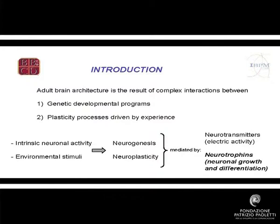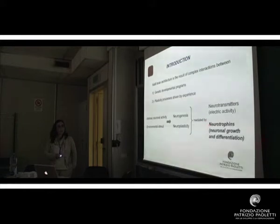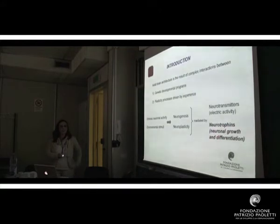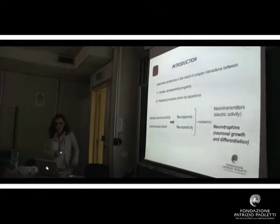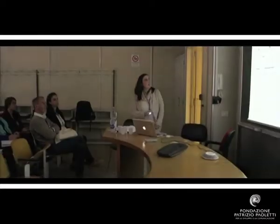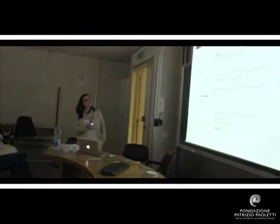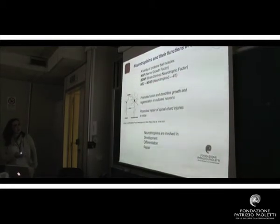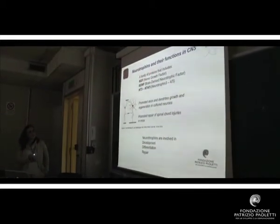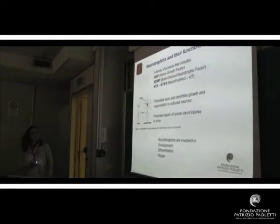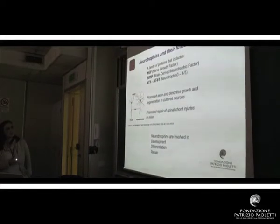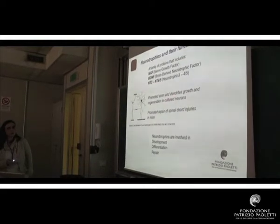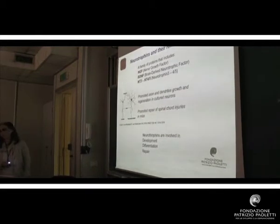These processes are mediated in part by neurotransmitters, which are the modulators of the electrical activity of neurons, and by neurotrophins, specific molecular proteins that regulate neuronal growth and differentiation of neurons. The neurotrophins are a family including nerve growth factor, brain-derived neurotrophic factor, neurotrophin 3 and 4. The first neurotrophin discovered was NGF by Rita Levi Montalcini many years ago, and she showed for the first time how this protein could promote axon and dendrite growth in cultured neurons and also promote repair of spinal cord injuries in mice.